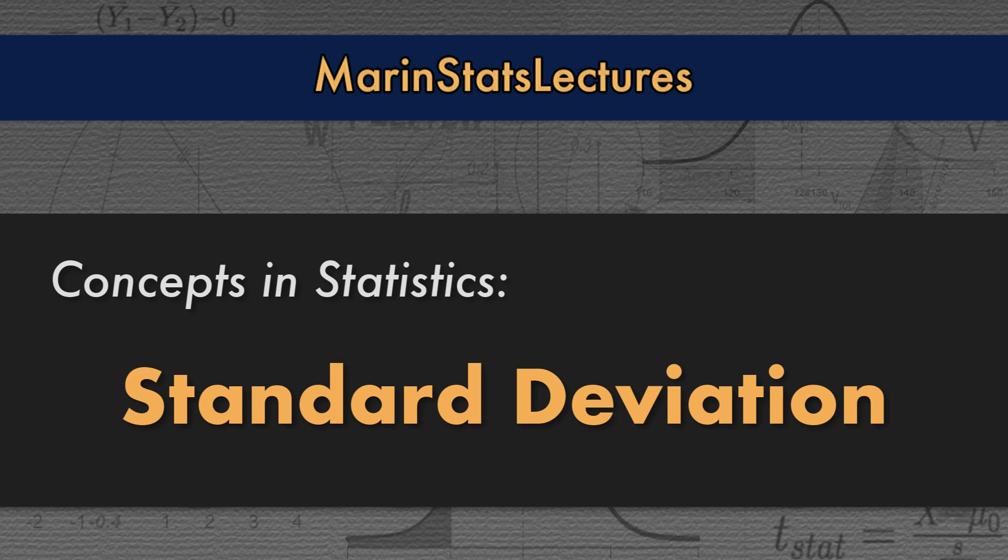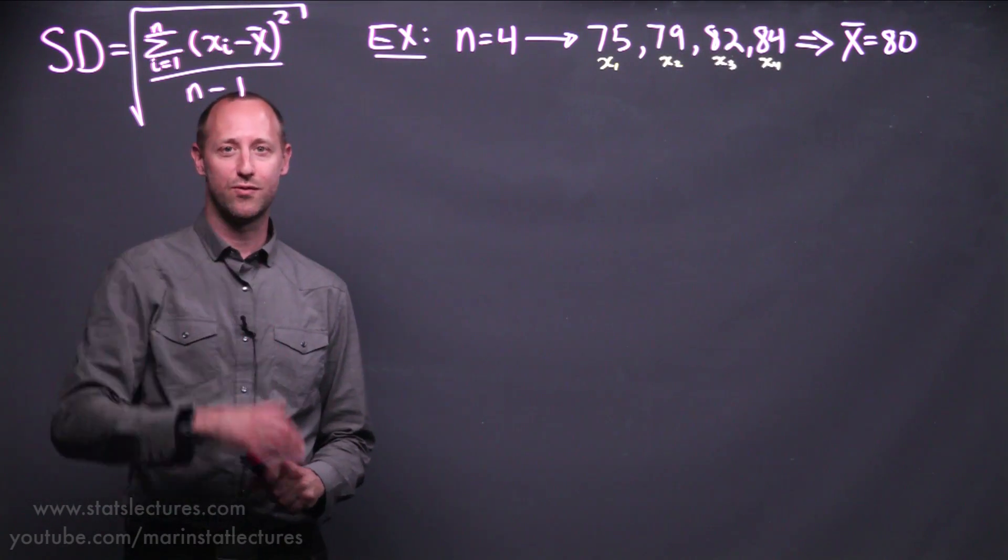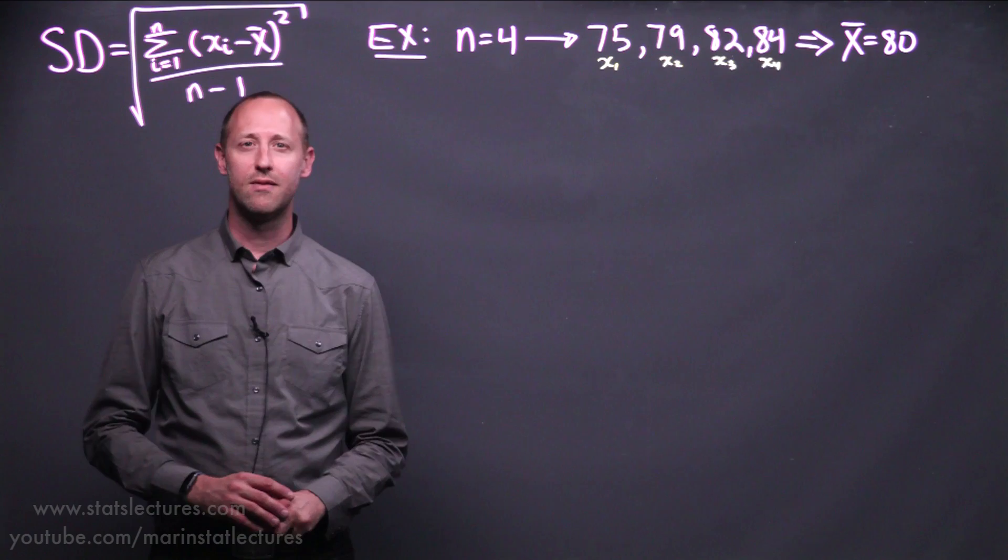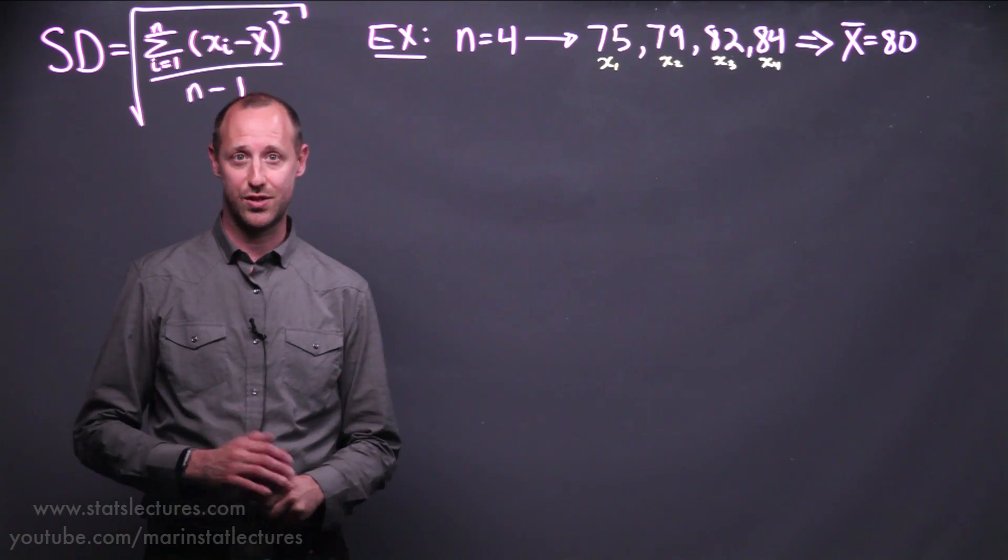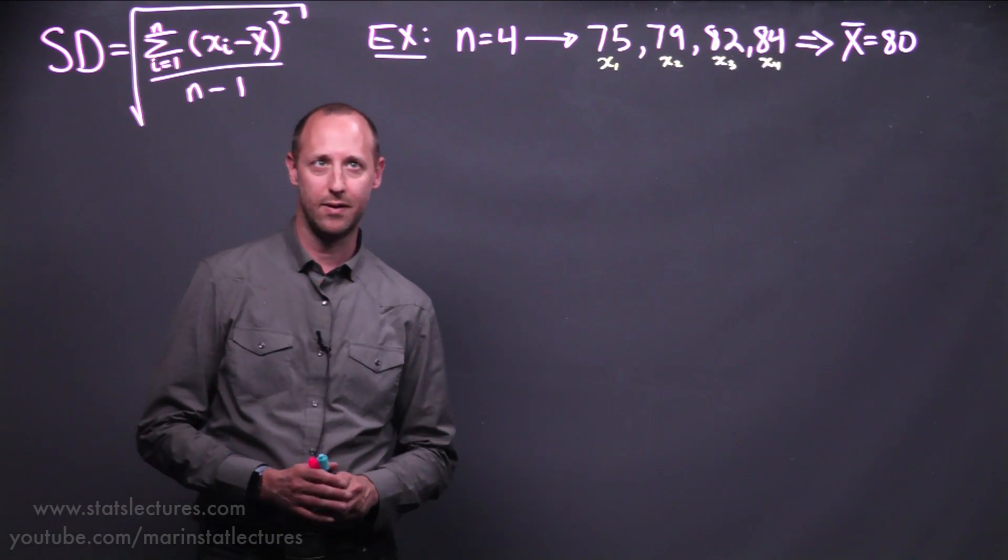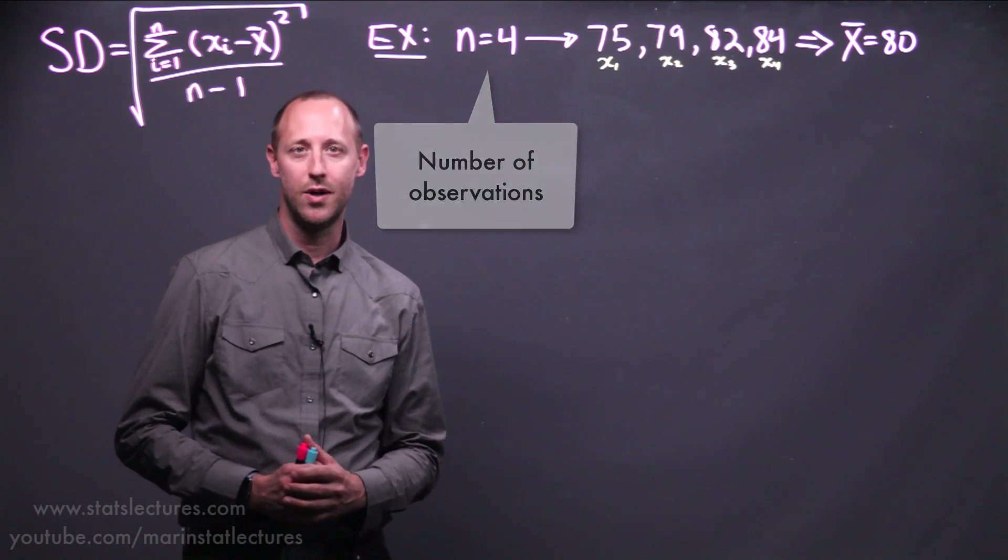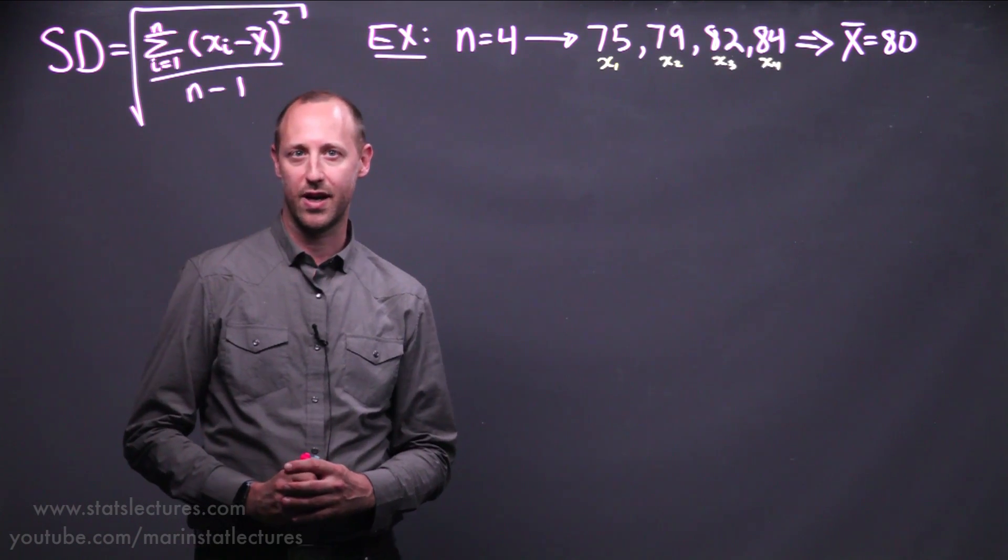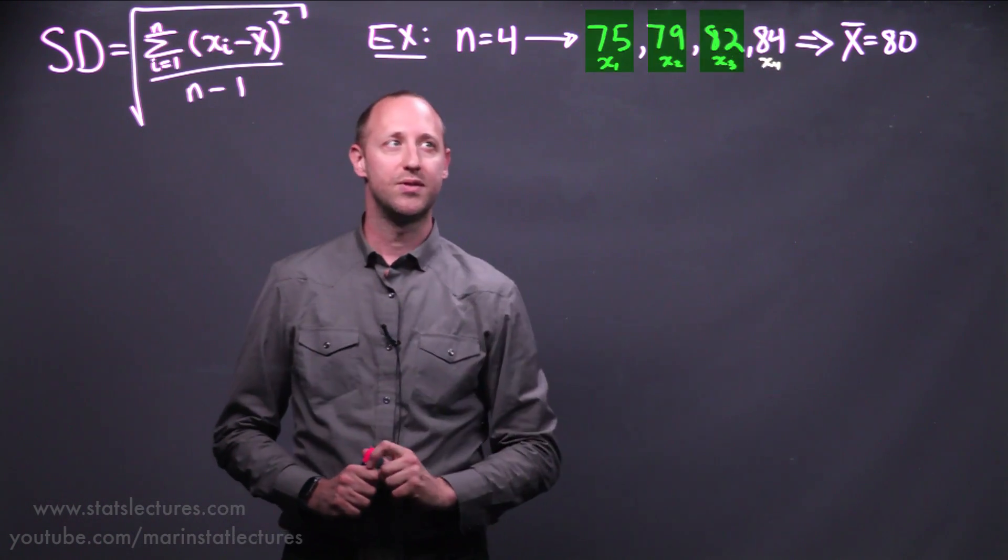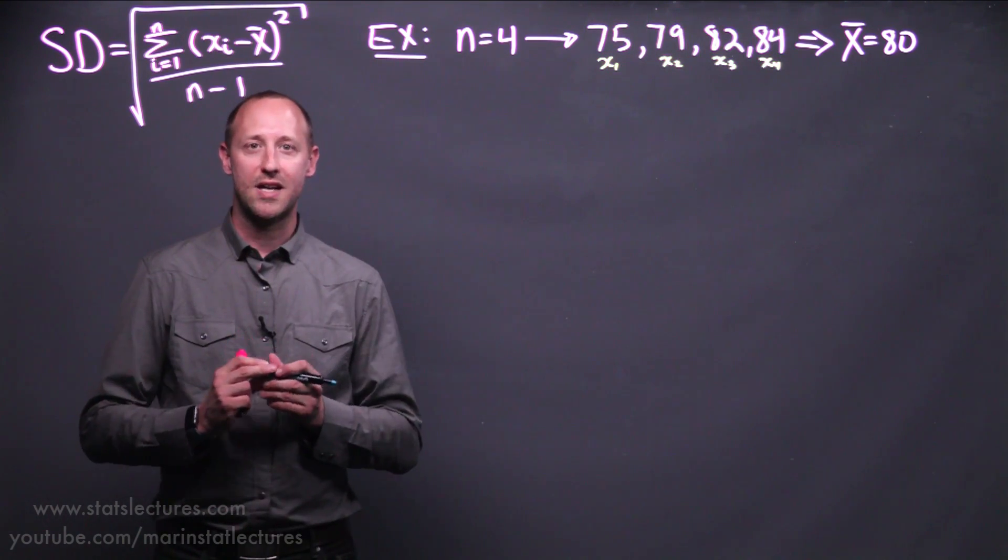In this video we're going to talk about the standard deviation and what it's actually trying to measure. Often the standard deviation is presented as a formula like this, but that doesn't really give us much insight into what it's actually trying to measure. So we're going to work through this simple example here. We have four observations and I've kept the data set simple so that we can do all the calculations in our head and focus on the concept. We've got these four observations here and they have a sample mean of 80.